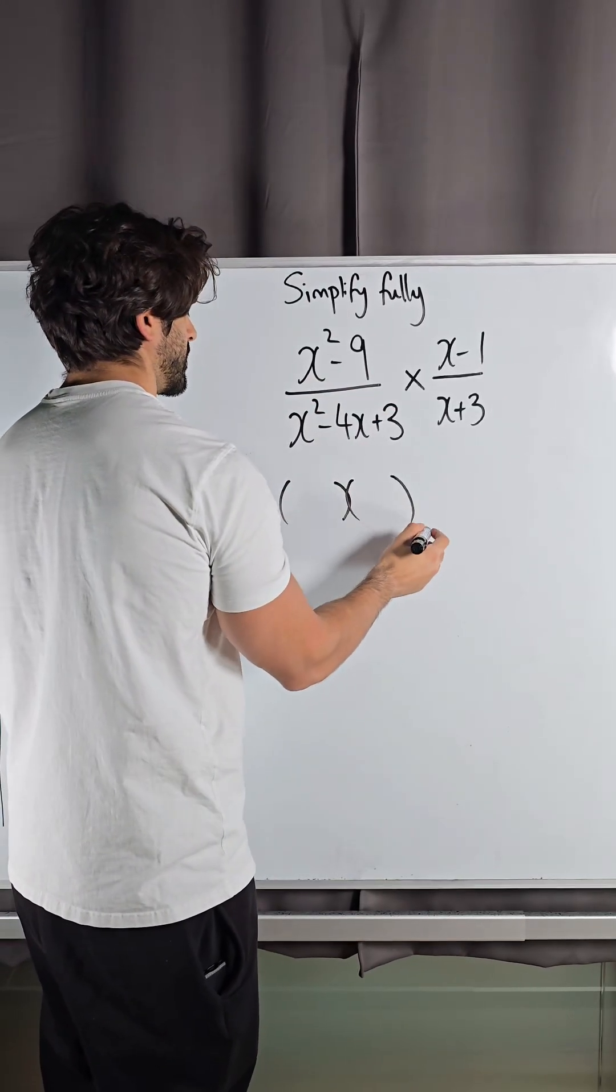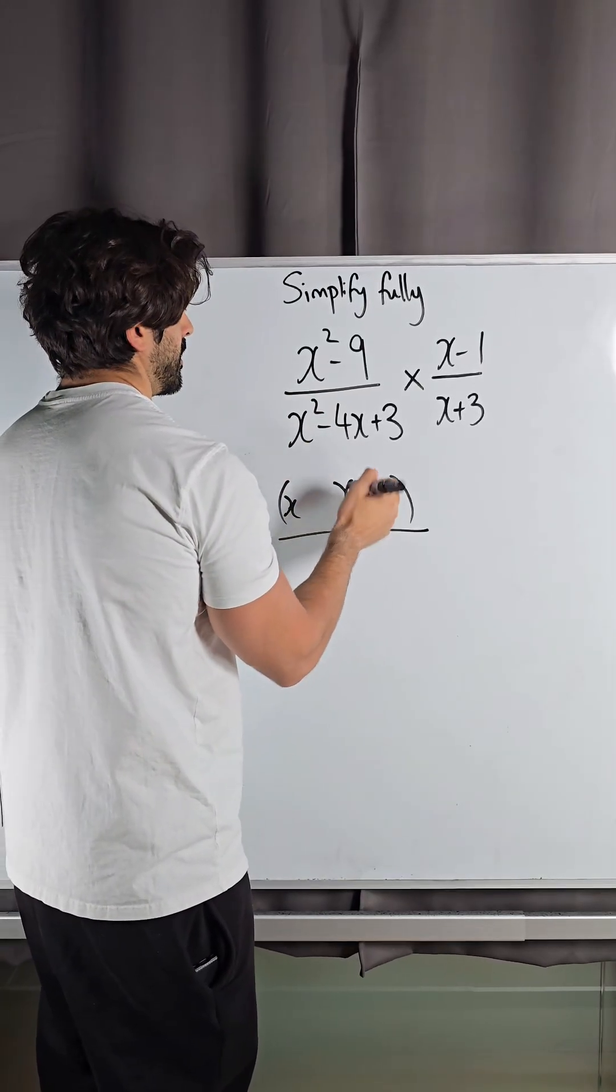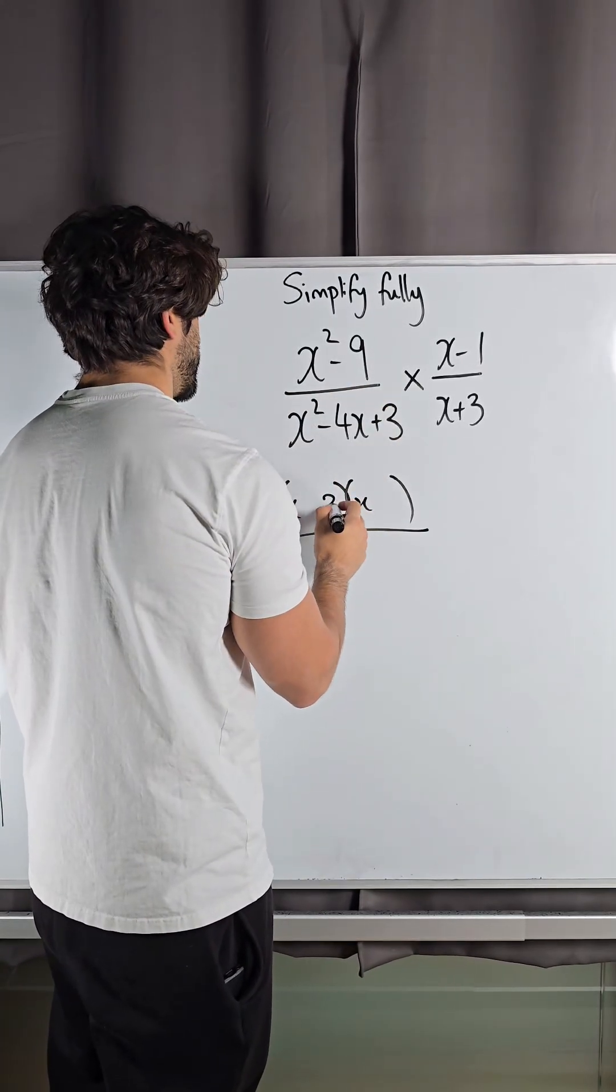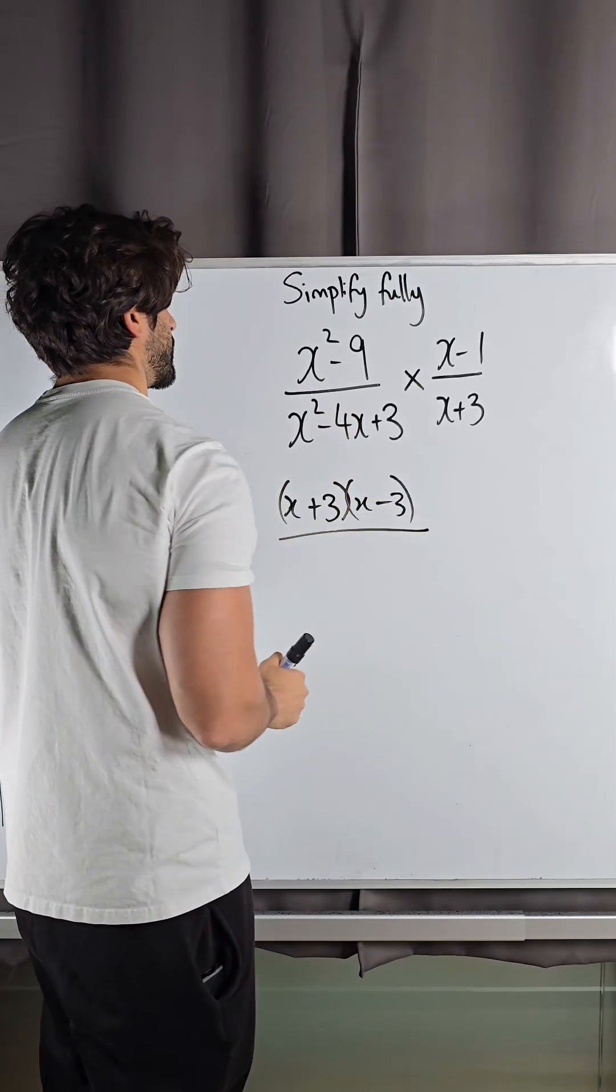So we're going to open up two brackets. What multiplies by itself to give you x squared is x. What multiplies by itself to give you 9 is 3. One is plus, one is minus. So that's difference of two squares.